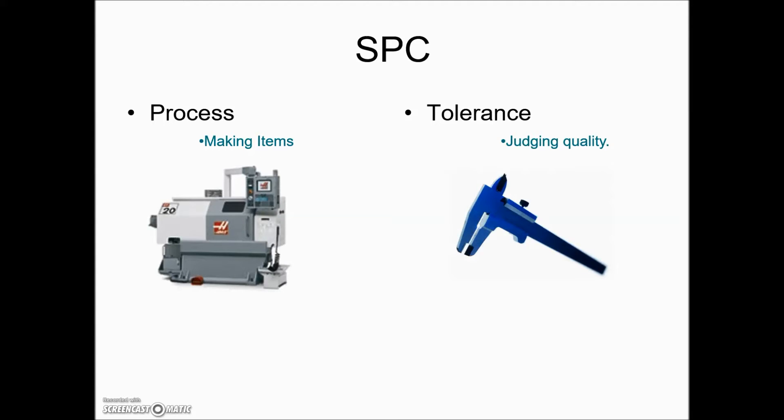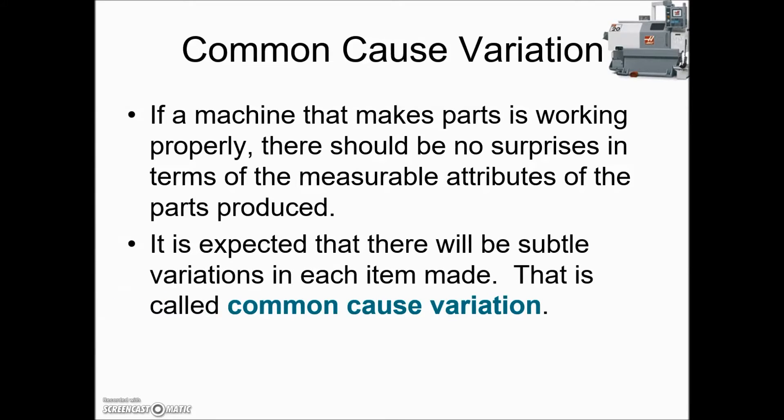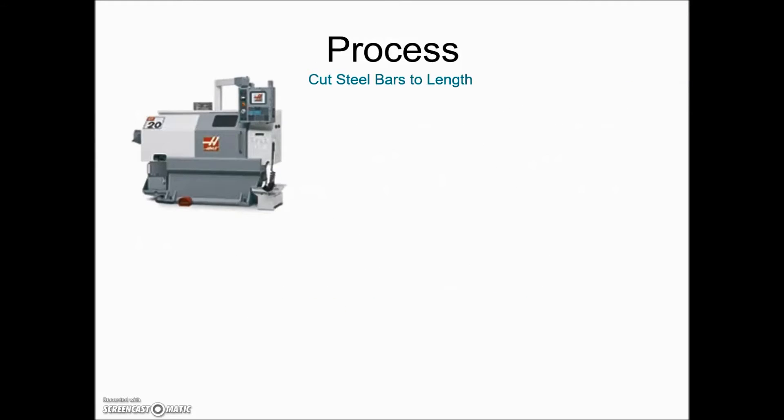There's two areas that this covers and we'll start out taking a look at the process. If a machine that makes parts is working properly, there should be no surprises in terms of the measurable attributes of the parts produced. It is expected that there will be subtle variations in each item made.